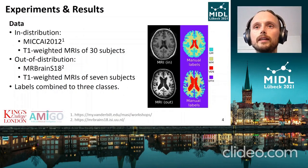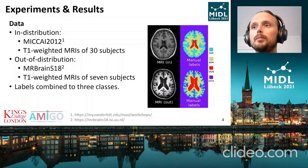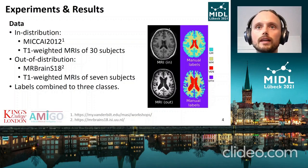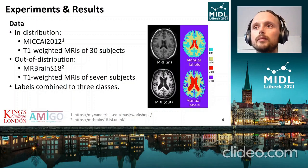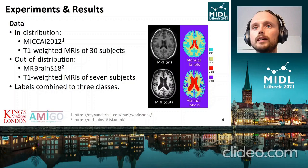We validate our method on two public datasets of brain MRIs: MICCAI 2012, which we use as our in-distribution dataset, and MRBrainS18, which we use as our out-of-distribution dataset. This means that the models are only trained on data from MICCAI 2012. For both datasets, we combine their manual segmentation labels into gray matter, white matter, and CSF. Please see our paper for train/test/validation splits and more details about this data.